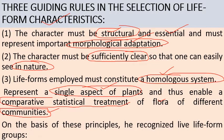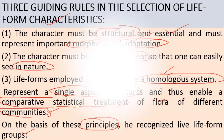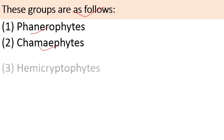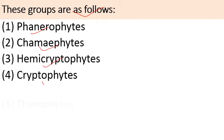On the basis of these principles, Raunkiaer recognized life forms into various groups: first, Phanerophytes; second, Chamaephytes; third, Hemicryptophytes; fourth, Cryptophytes; and finally, Therophytes.